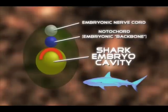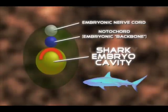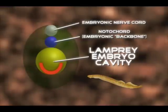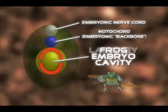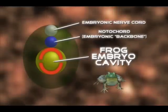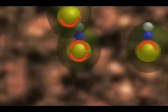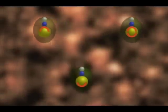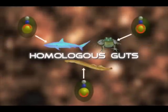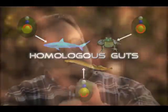In sharks, the gut develops from cells in the roof of the embryonic cavity. In lampreys, the gut develops from cells on the floor of the embryonic cavity. And in frogs, the gut develops from cells in both the roof and the floor. So you have a homologous structure in vertebrates that is built in one way in a shark, in one way in a lamprey, in another way in frogs, and you've got these very different developmental pathways converging to the same structure.